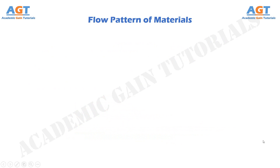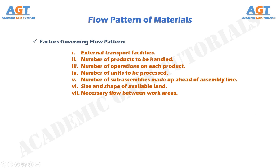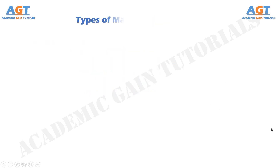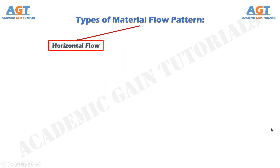Quite often a plant layout design starts with the flow system, around which services and other facilities are added and building designs are modified accordingly, but sometimes the flow must be adopted to suit existing buildings. Factors governing flow pattern are: the external transport facilities, the number of products to be handled, the number of operations on each product, the number of units to be processed, the number of sub-assemblies made up ahead of the assembly line, the size and shape of available land, and the necessary flow between work areas.